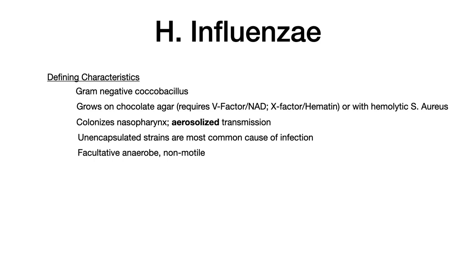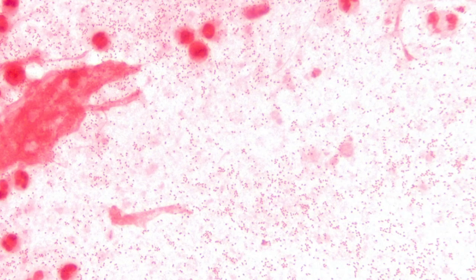A cool aside — though it doesn't show up on exams — is that this bacteria is called H. influenzae because it was discovered in the late 1800s during an influenza pandemic, and the discoverer thought it was the bacteria causing the common flu. That's why it retained 'influenzae' in its name. Here's an image of H. influenzae — the key thing to note is that it is a gram-negative coccobacillus.